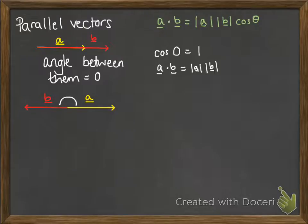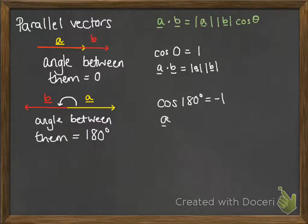Now if they're parallel but in opposite directions, that means we get an angle between them of 180 degrees. Cos of 180 degrees is minus 1, so the scalar product is minus the product of the magnitudes.